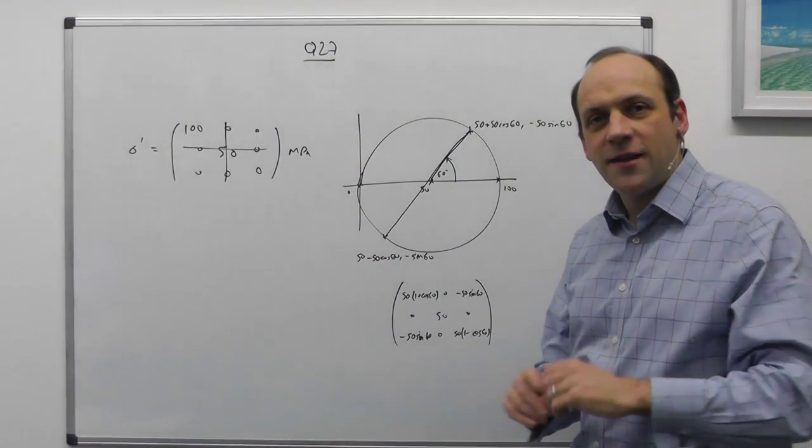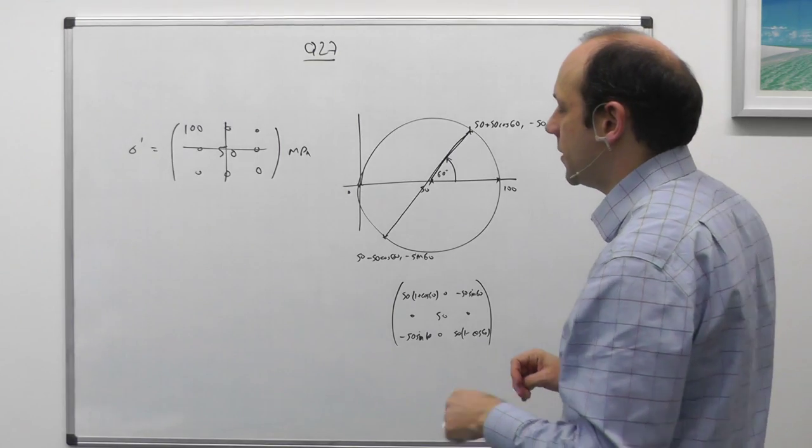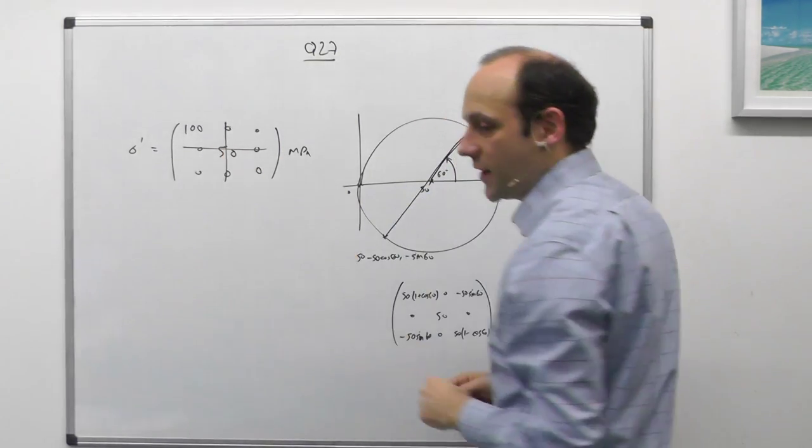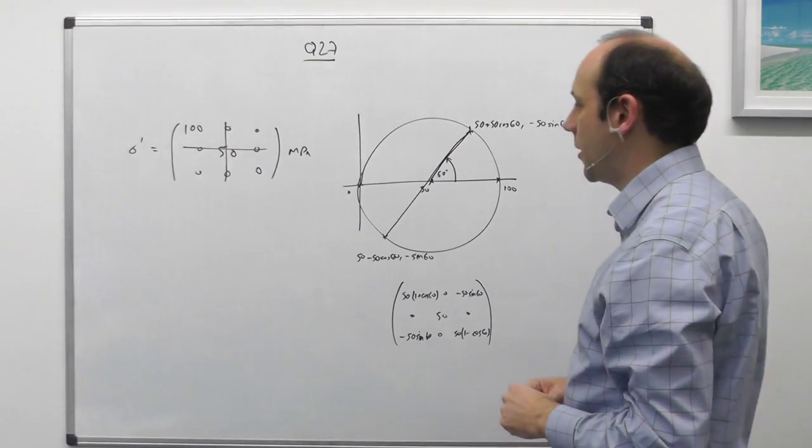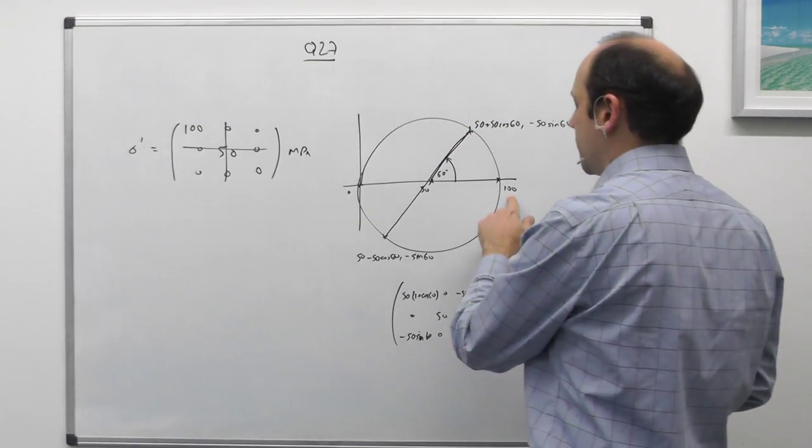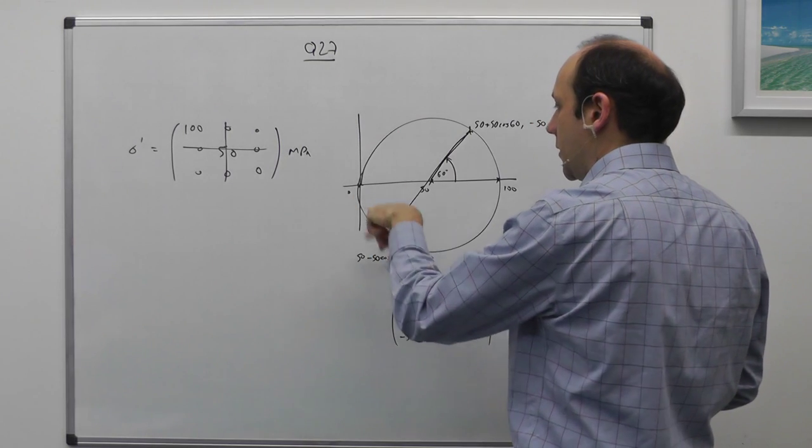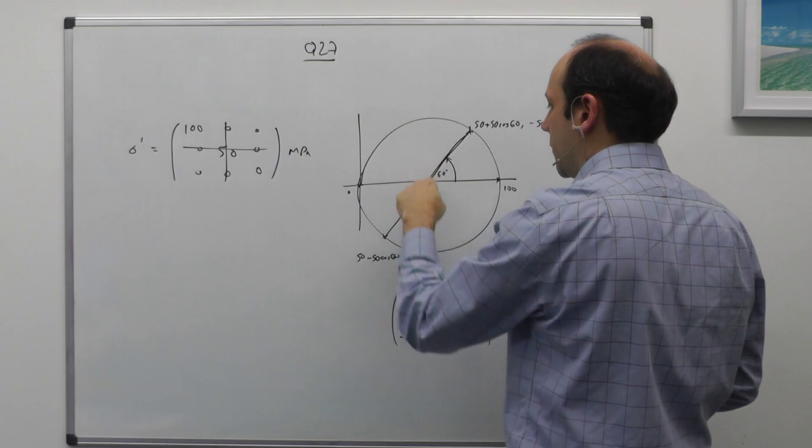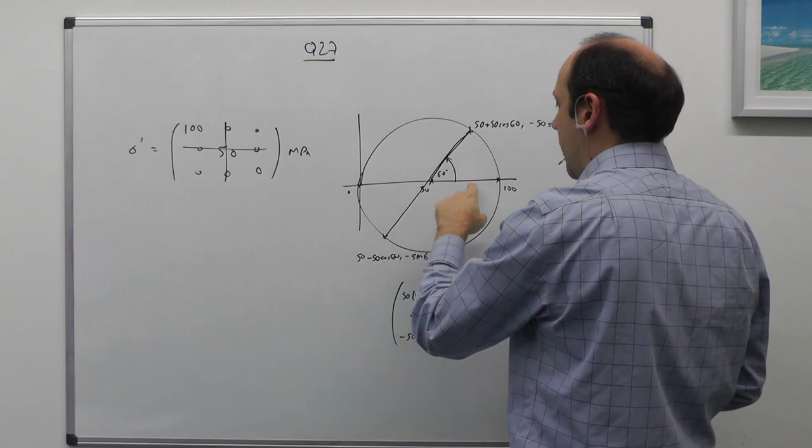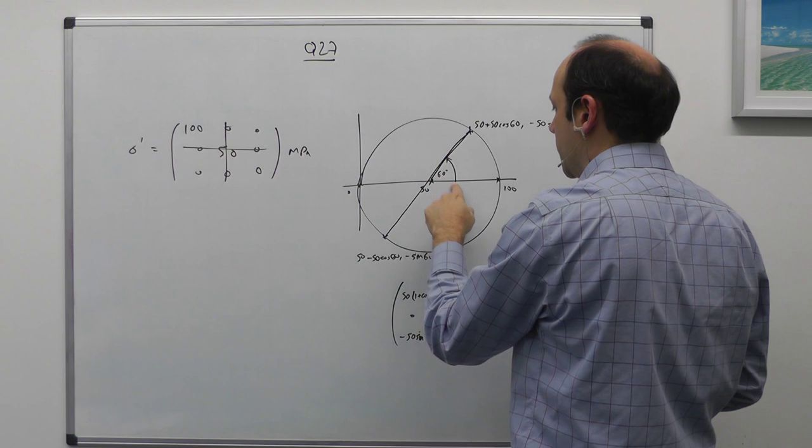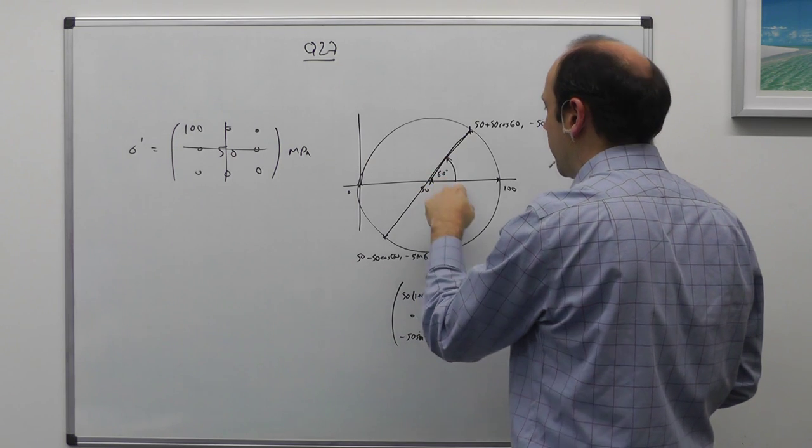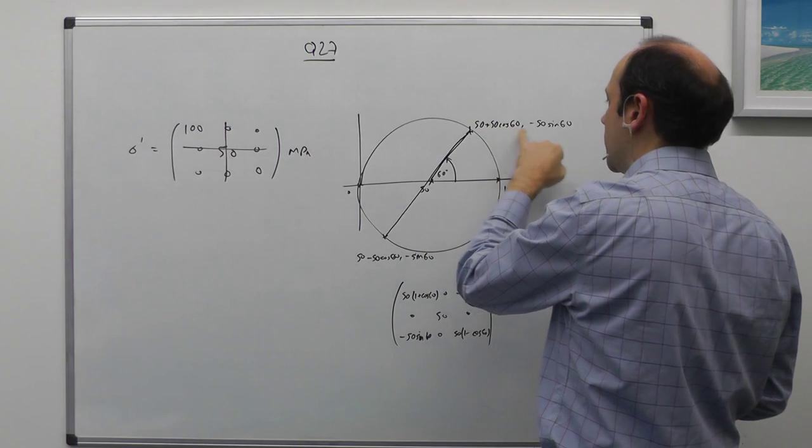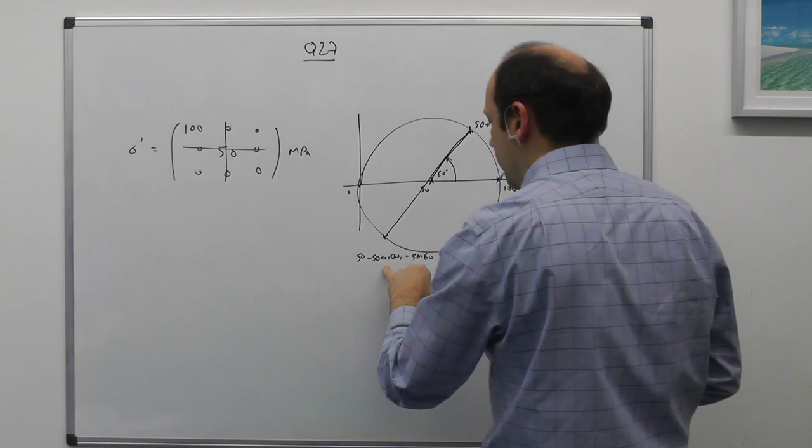OK, so just as an addendum to question 27, we did a rotation around the middle principal stress axis between the 100 and the 0, the maximum and the minimum. And that gave us this Mohr's circle, so there's 100, there's 0, there's no shears because it's the principal stress matrix or tensor. There's Mohr's circle. The center's at 50 and therefore this amount is cos 60 times 50 because the radius is 50. So the stress is here, the normal stress is 50 plus 50 cos 60. And this one's 50 minus 50 cos 60.